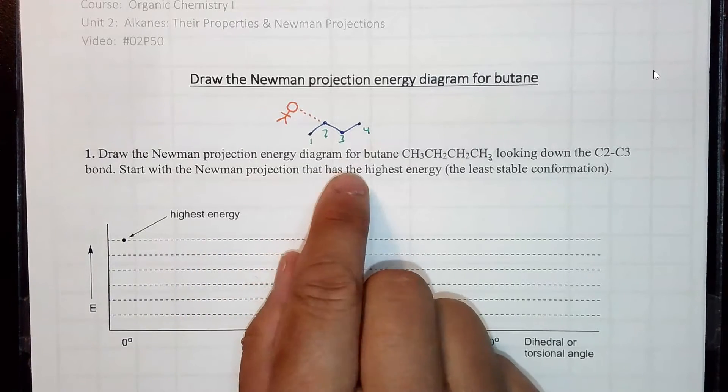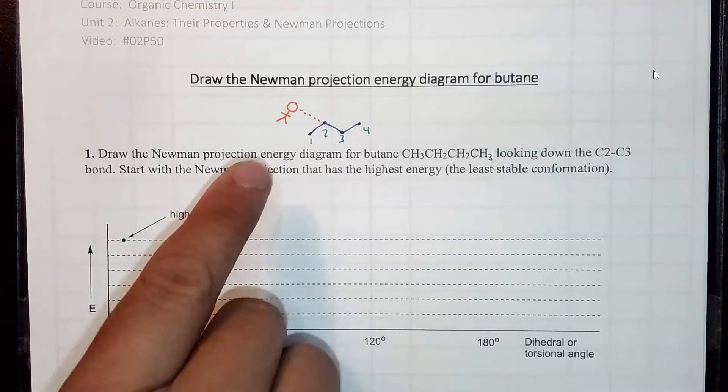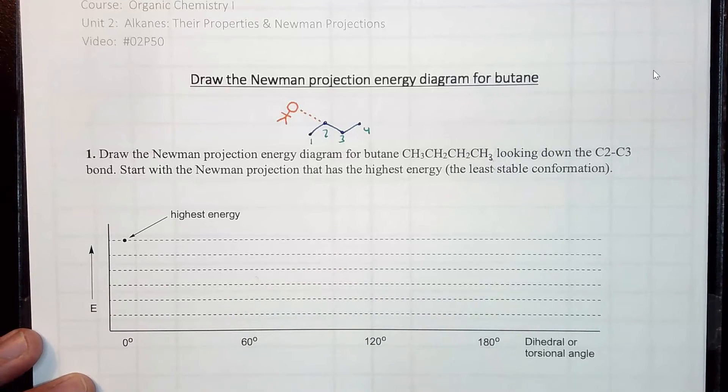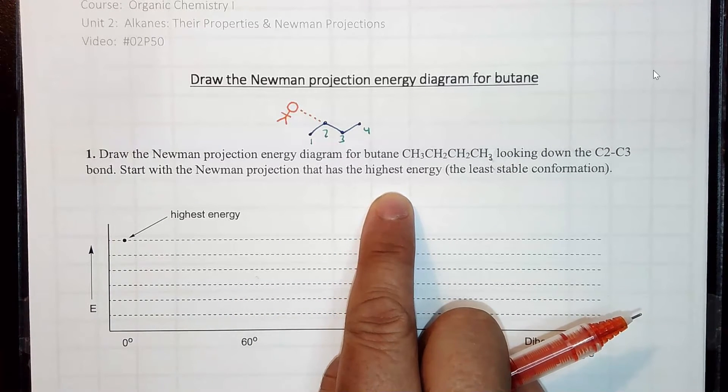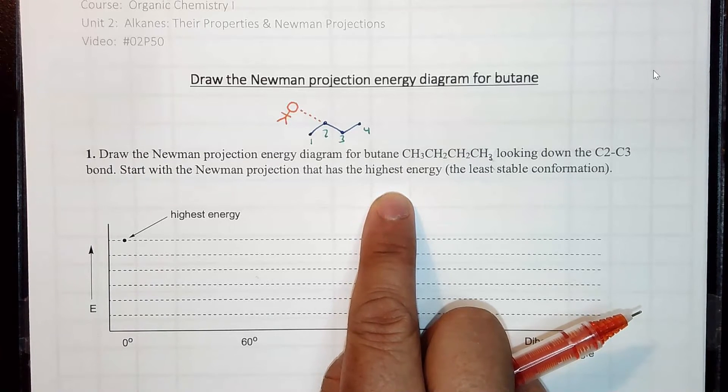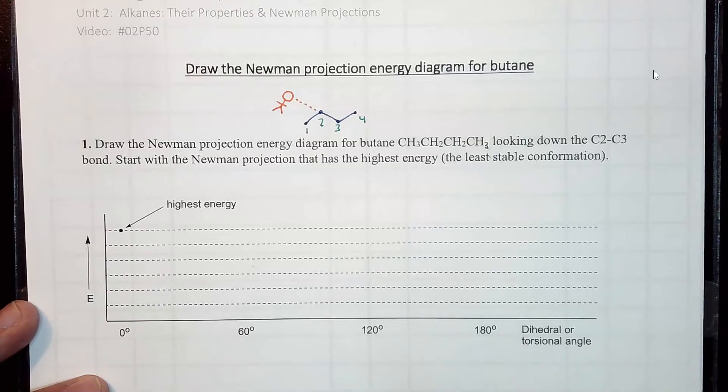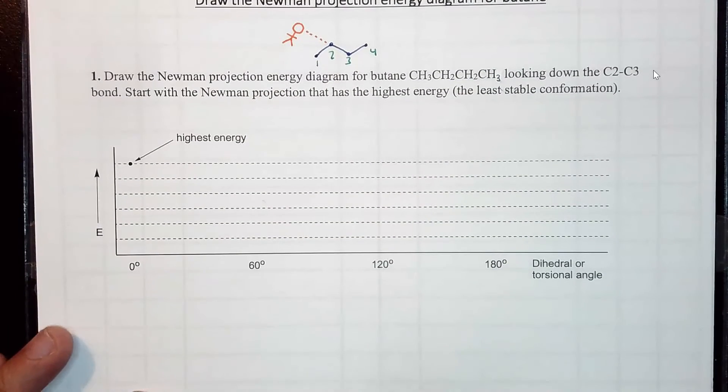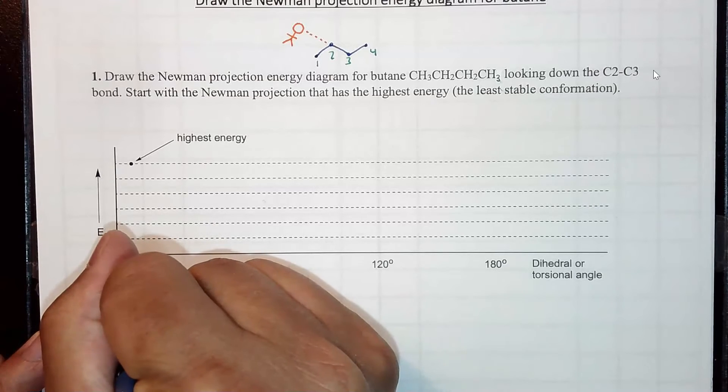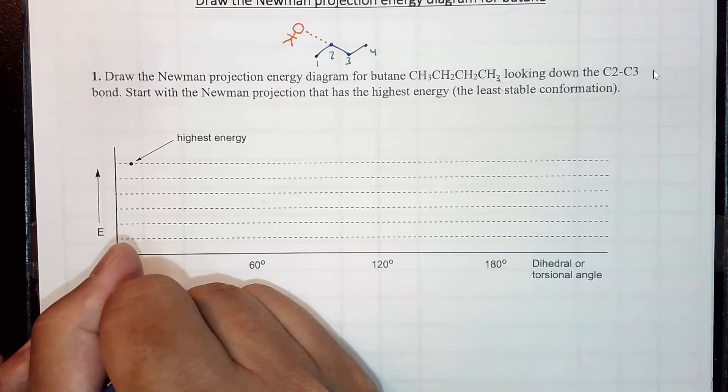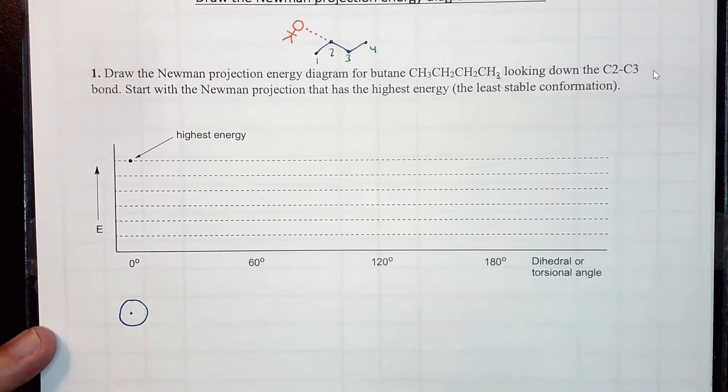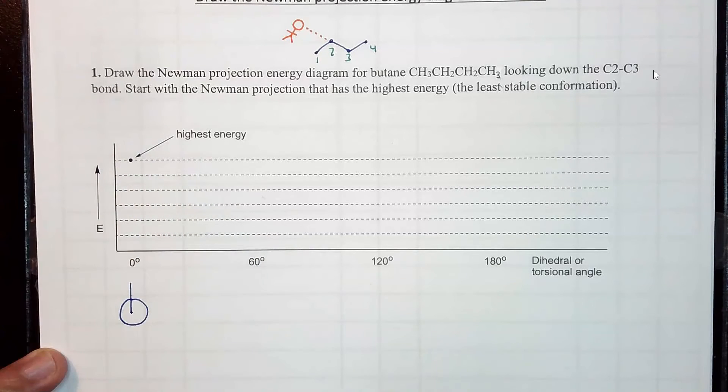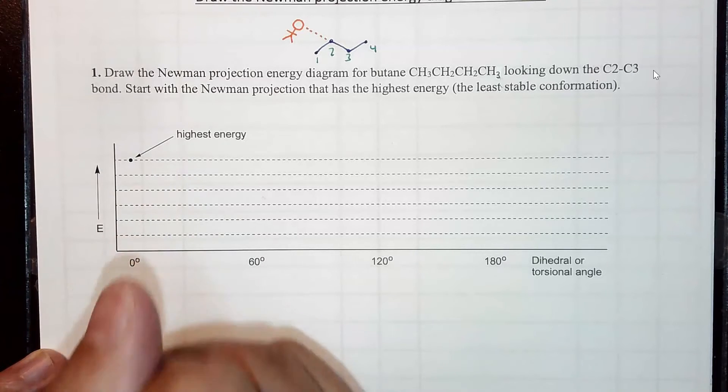Now, the way I drew it zigzag makes it look staggered from their point of view. But I like to start at the eclipsed conformation because it's asking for the highest energy. And we know that every eclipsed conformation is higher in energy than any staggered. So set your templates first. That's what I would do. A template for your Newman projections is a dot and a circle. And I want eclipsed. Eclipsed will have the highest energy. And don't worry about what's attached to the bonds yet. So let me draw the templates.